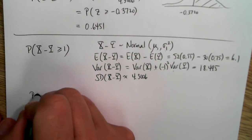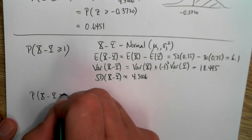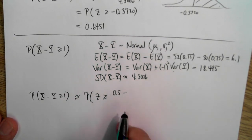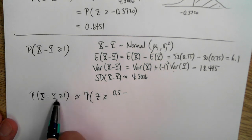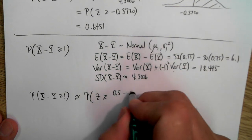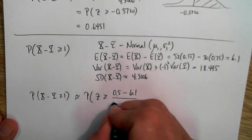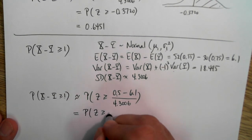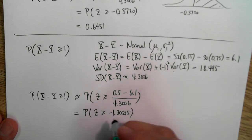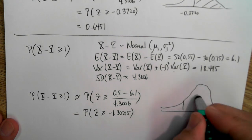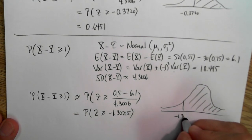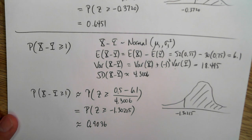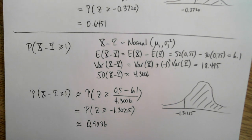The probability that X minus Y is greater than or equal to 1: converting to standard units and applying the continuity correction, that's the probability that Z is greater than or equal to 0.5 minus the mean 6.1, divided by the standard deviation 4.3006. That gives the probability that Z is greater than or equal to negative 1.30215. Using the calculator, that works out to be approximately 90.4%. So that's the probability that there are more wins against the Western Conference than against the Eastern Conference.